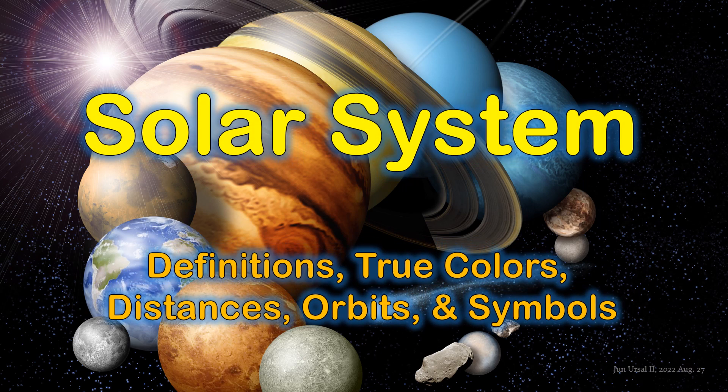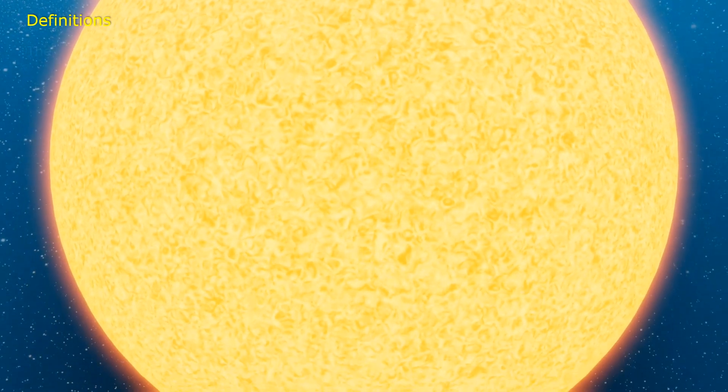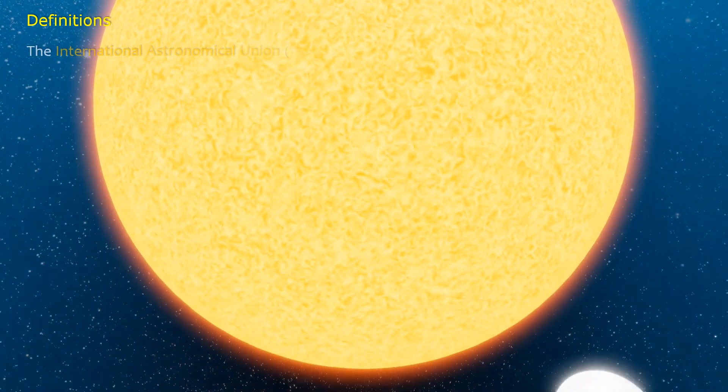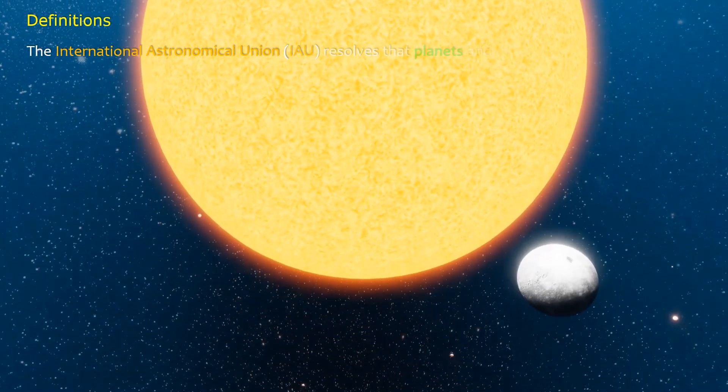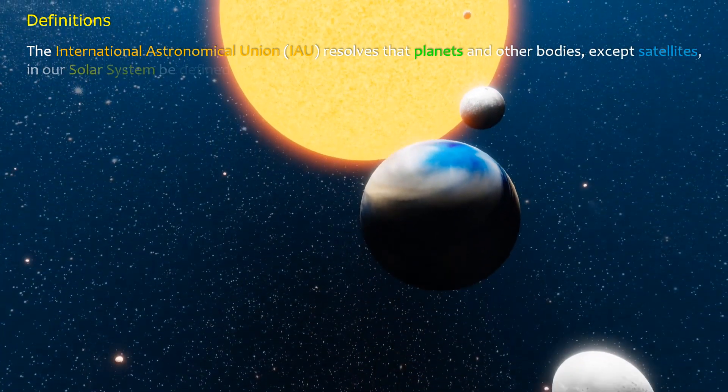Solar system: definitions, true colors, distances, orbits, and symbols. The International Astronomical Union resolves that planets and other bodies, except satellites, in our solar system be defined into three distinct categories in the following way.